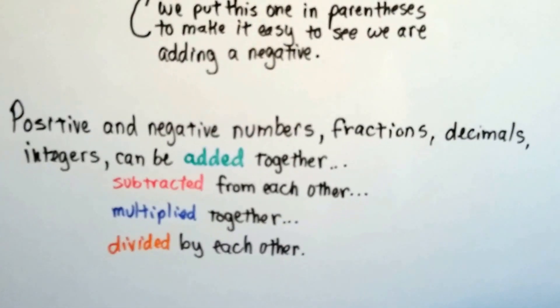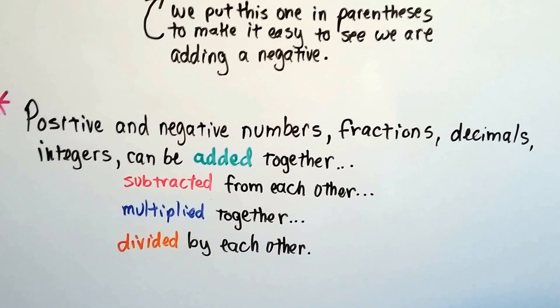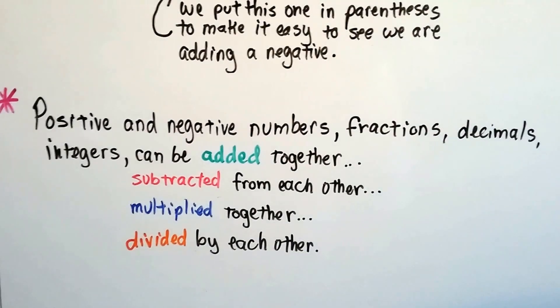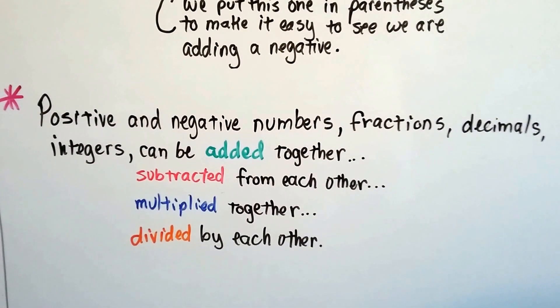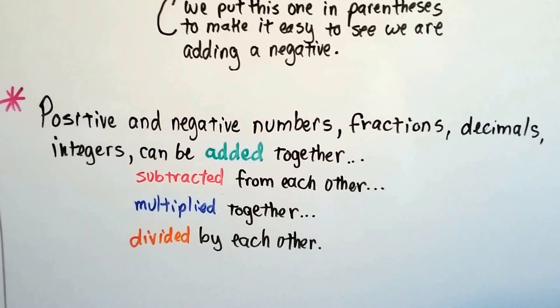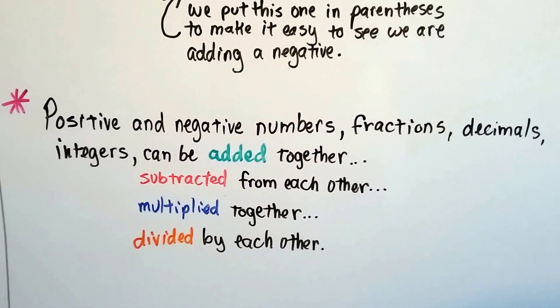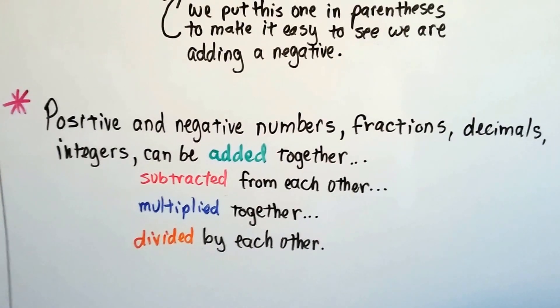So positive and negative numbers, fractions, decimals, integers can be added together, subtracted from each other, multiplied together and divided by each other. And there's rules for adding, subtracting, multiplying, and dividing positive and negative numbers.